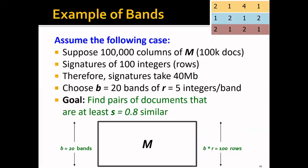Let's analyze LSH with an example. Suppose we have 100,000 documents — 100k columns in this large matrix M — and each signature consists of 100 integers, so we have 100 rows. This whole signature matrix takes only 40 megabytes of space, so it can easily fit into main memory. We choose B to be 20 — so we have 20 bands — and R to be 5, giving us 5 rows per band. The goal is to find pairs of documents that are at least 0.8 similar.